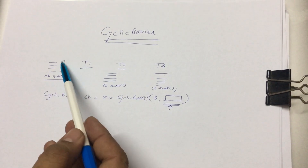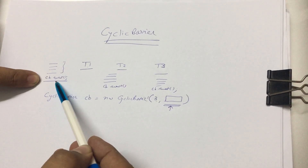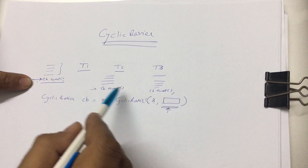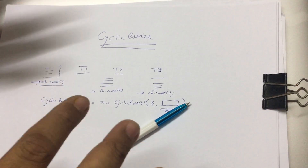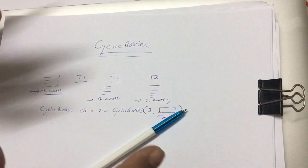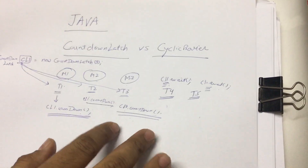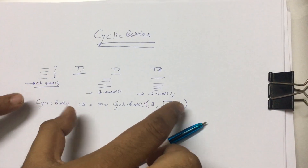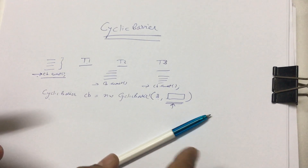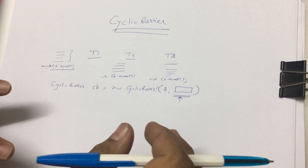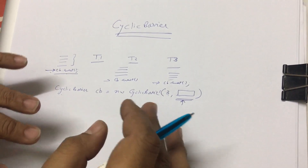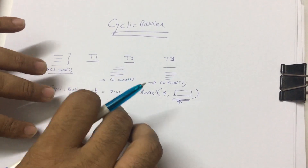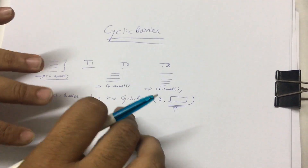As soon as t1 executes and reaches cb.await(), it waits there until all other threads also reach and call await. Unlike CountDownLatch, all threads here are of the same kind — they are all waiting for each other. For a real-world analogy, imagine three friends traveling from Delhi to Jaipur who agree to meet at Delhi bus stand before starting the journey.